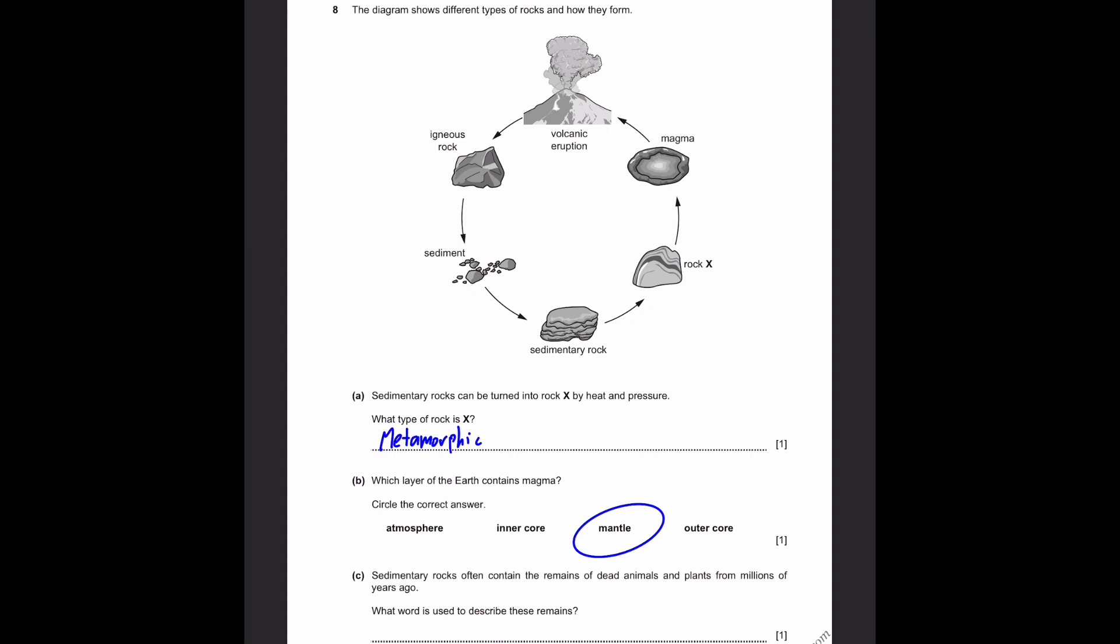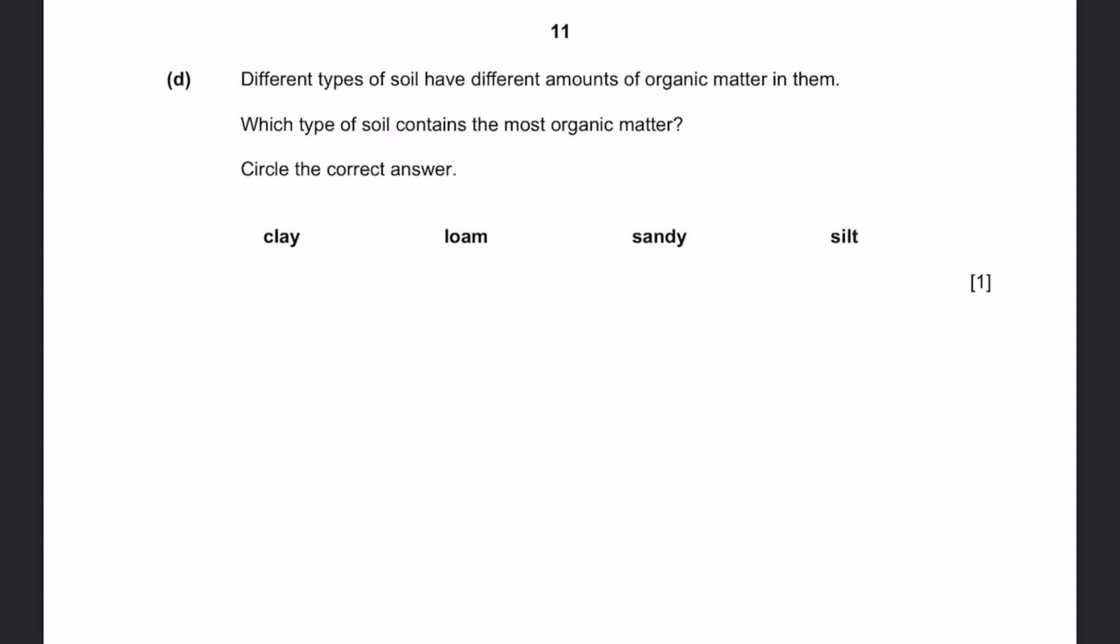Part C. Sedimentary rocks often contain the remains of dead animals and plants from millions of years ago. What word is used to describe these remains? Fossils. Very easy. Part D. Different types of soil have different amounts of organic matter in them. Which type of soil contains the most organic matter? Circle the correct answer. Clay, loam, sandy, or silt? Answer is loam.